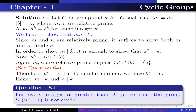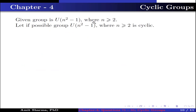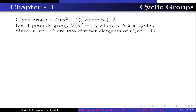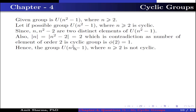Question number 84. For every integer n ≥ 2, prove that the group U(n²−1) is not cyclic. Suppose, if possible, that U(n²−1) is cyclic. Since n and n²−2 are two distinct elements of U(n²−1), both have order 2. This is a contradiction since a cyclic group has exactly φ(2) = 1 element of order 2. Hence U(n²−1) is not cyclic for n ≥ 2.